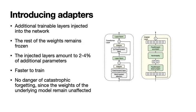One of the approaches aimed at resolving the issues we just mentioned is adapter-based parameter-efficient fine-tuning. The idea behind adapters is to inject a number of additional trainable layers into the network while freezing the rest of the model. On the diagram to the right, the bottleneck adapter is demonstrated, and on the left part of the diagram, we can see how adapter layers are inserted into existing transformer layers.